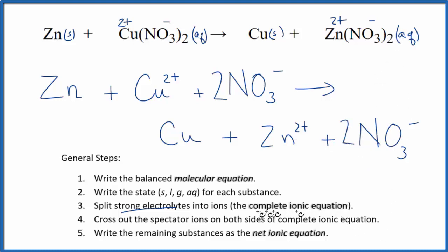This is the complete ionic equation, also called the total ionic equation. Now we cross out spectator ions - ions that appear on both sides. We have zinc on both sides.